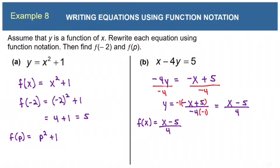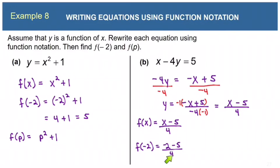Now let's evaluate f of negative 2. We replace every x with negative 2: negative 2 minus 5 is negative 7, so we get negative 7 over 4, which is negative 7 fourths. Then f of p is simply p minus 5 over 4.